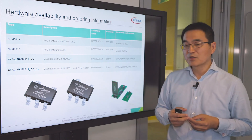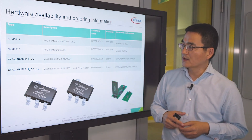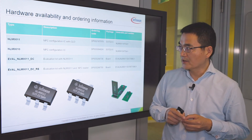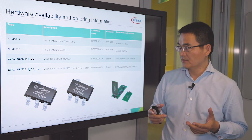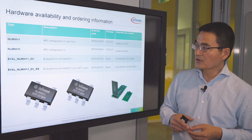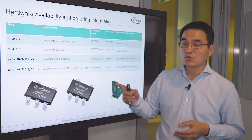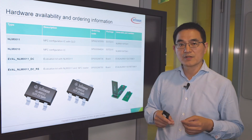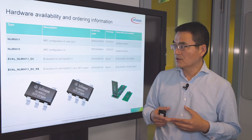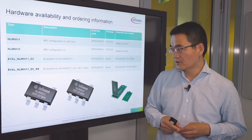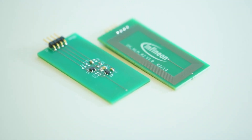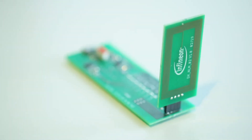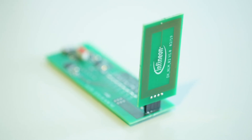I would like to show you our products. We have two products in this family. One is the NLM-C011, which is an IC with NFC configuration and CLO function. The other, a lighter version, is the NLM-C010, which offers NFC configuration but without the CLO function. Depending on your needs, you can select one of them for your application. To accelerate application design, we also offer an evaluation board. I would like to introduce my colleague Inata to present the evaluation board.